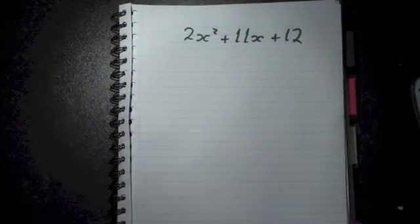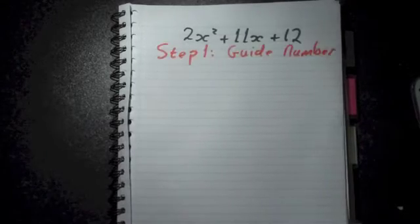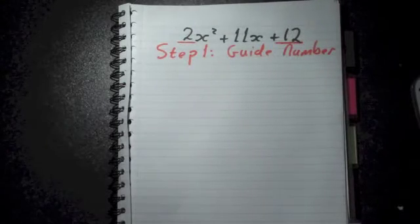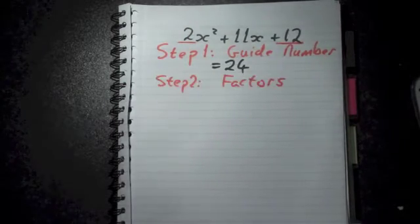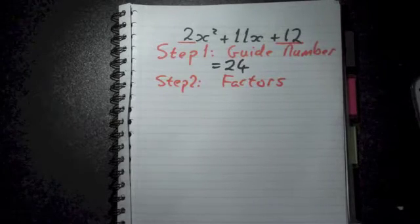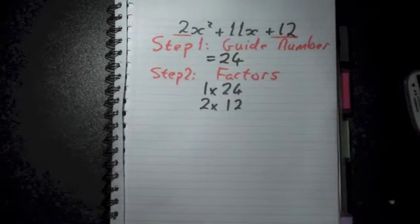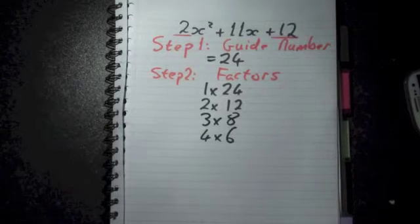To factorize a quadratic we follow four simple steps. Step 1 is finding our guide number — we get this by multiplying the first number by the last number, so in this case it's 24. In step 2 we list the factors of 24, i.e. the numbers that multiply to give you 24: 1 by 24, 2 by 12, 3 by 8, and 4 by 6.